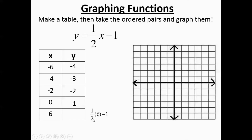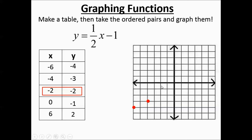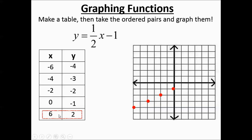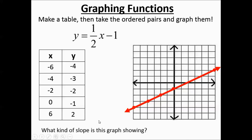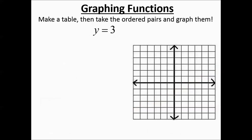Half of 6 minus 1 = 3 − 1 = 2. Graphing: (−6, −4) is left six down four; (−4, −3) is left four down three; (−2, −2) is left two down two; (0, −1) is down one; (6, 2) is right six up two. Even though that last point is far apart, it still lines up with the others — positive slope.